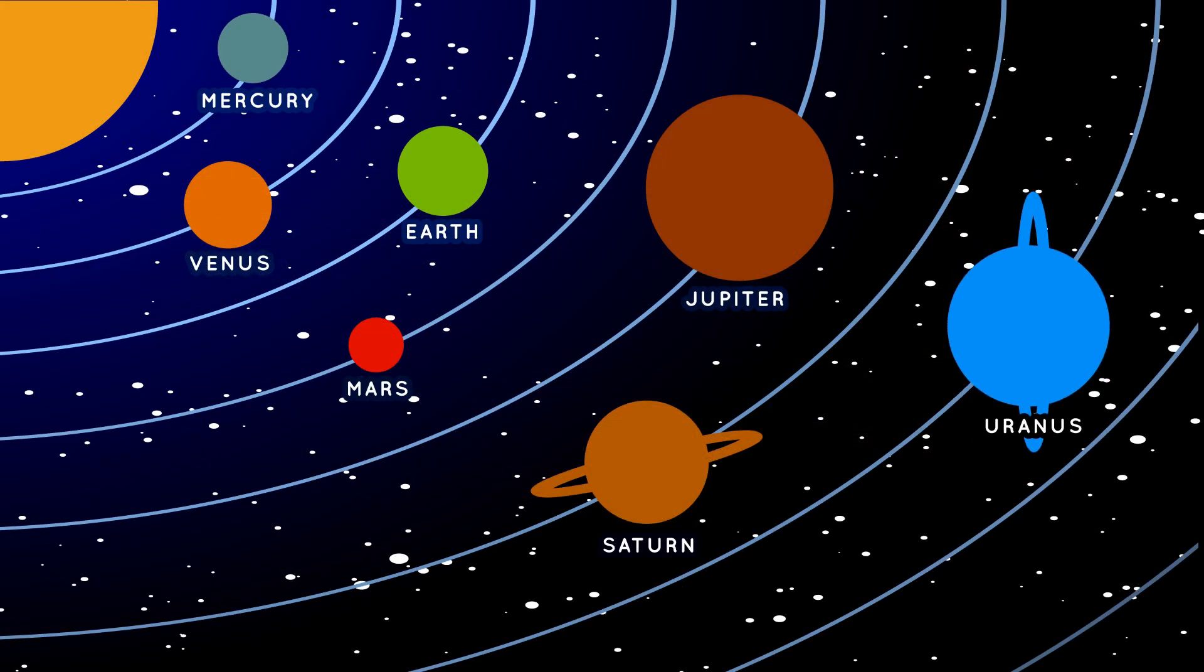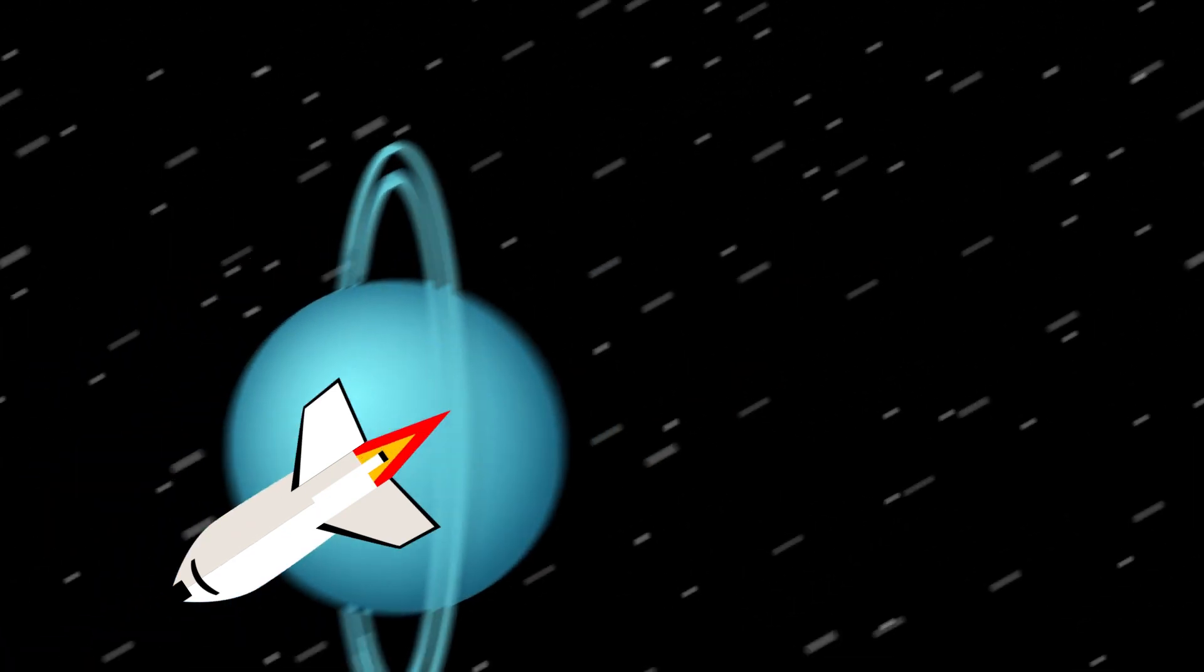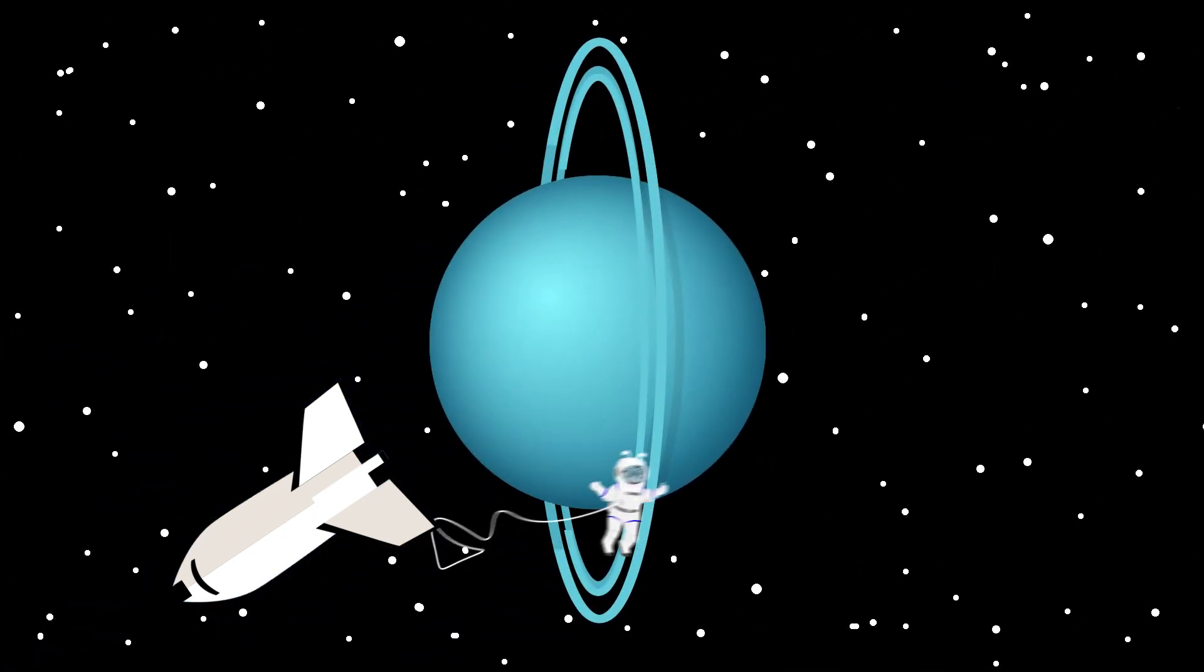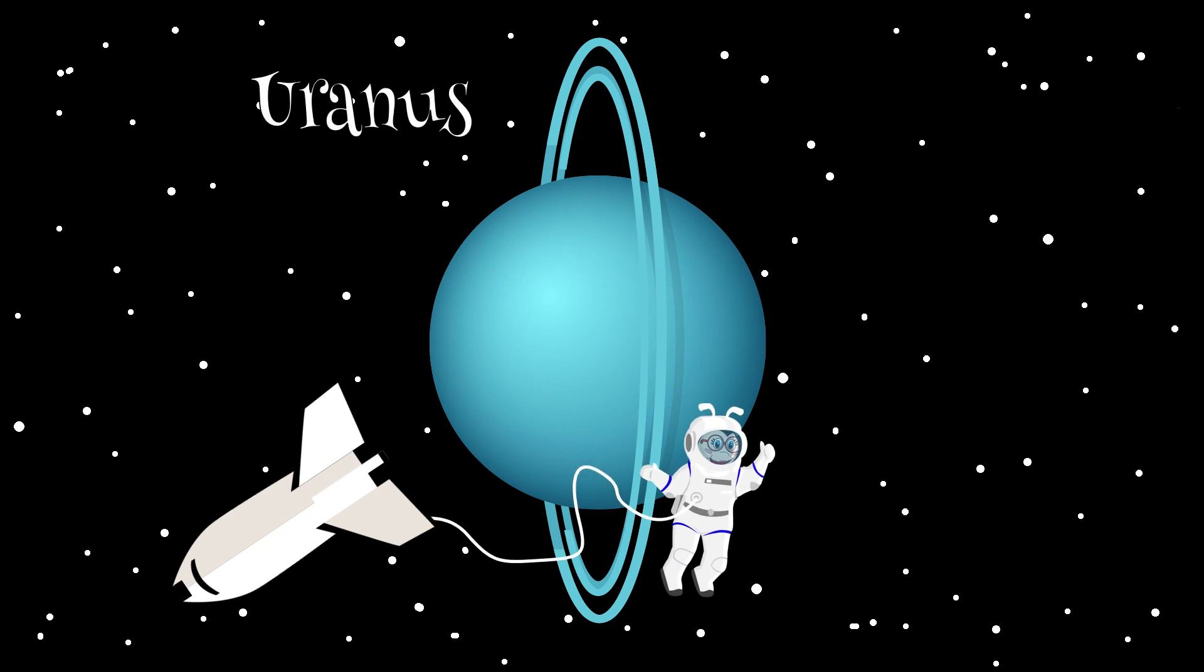Uranus is the seventh planet from the sun. Uranus is very cold and windy, so it is called an ice giant. Uranus is also surrounded by rings.